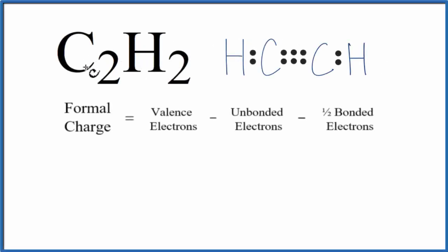To find the formal charge for each element in C2H2, we use this Lewis structure here and this formula. Let's do the hydrogen first.